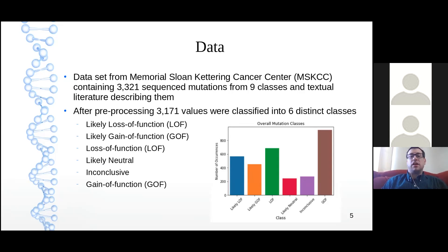Those classes are likely loss of function, likely gain of function, confirmed loss of function, likely neutral, inconclusive, and confirmed gain of function. As a note, in my figures for the rest of the talk, I'll use the LOF and GOF acronyms to represent loss and gains of function.